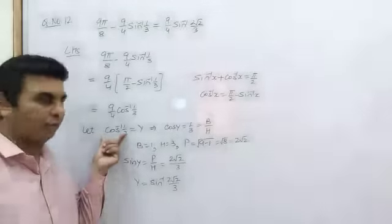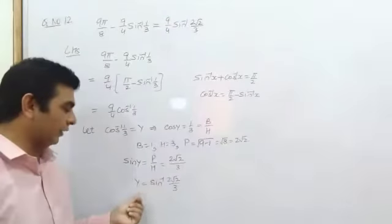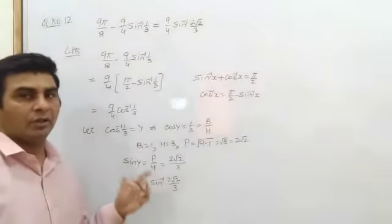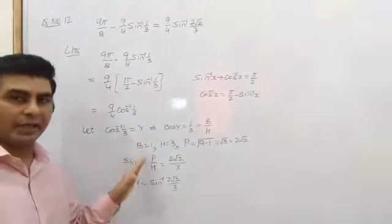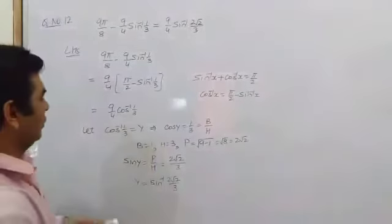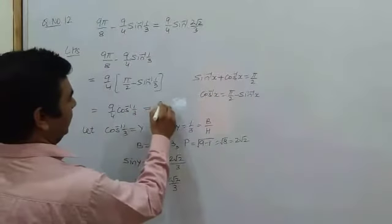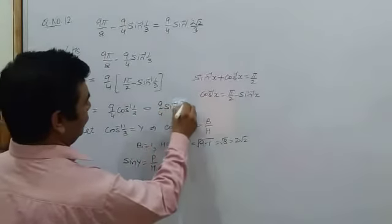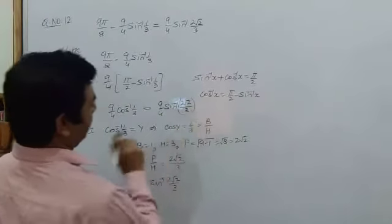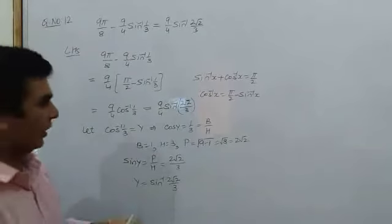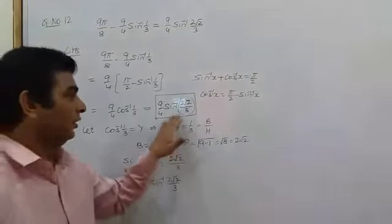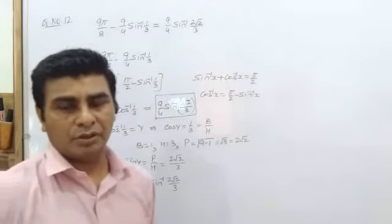We took cos inverse 1/3 as y, and y value is sin inverse 2 root 2 by 3, it means both are equal to each other. It implies cos inverse 1/3 can be replaced by sin inverse 2 root 2 by 3. So the answer will be 9/4 sin inverse 2 root 2 by 3. You can see this was the right hand side, so your question is complete.